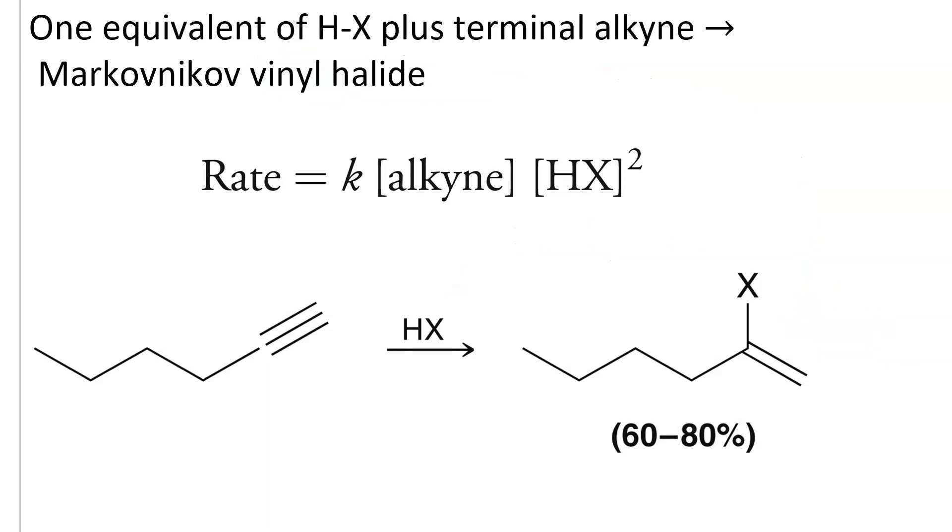If we look at the rate law, the rate of the reaction depends on the rate constant k times the concentration of the substrate, that's the alkyne there, times the concentration of the acid squared. This implies that the rate limiting step has a three-fold molecular collision between one molecule of the substrate and two molecules of the reagent.